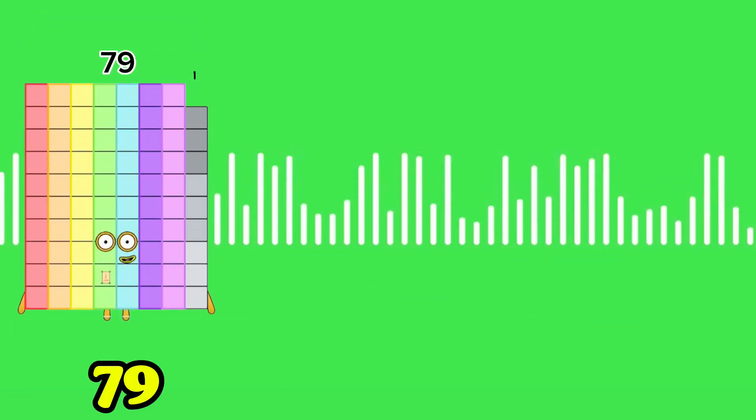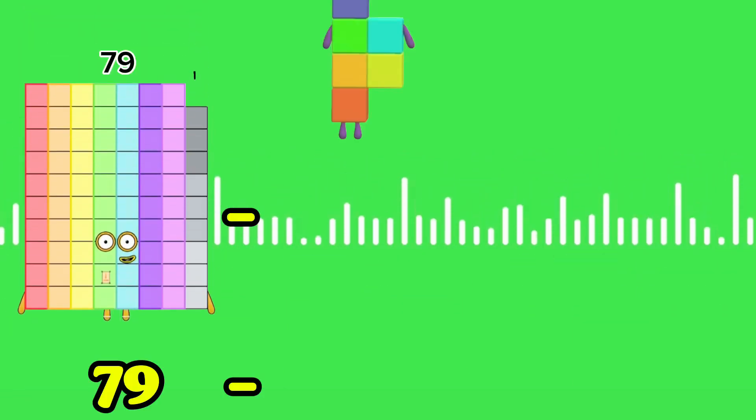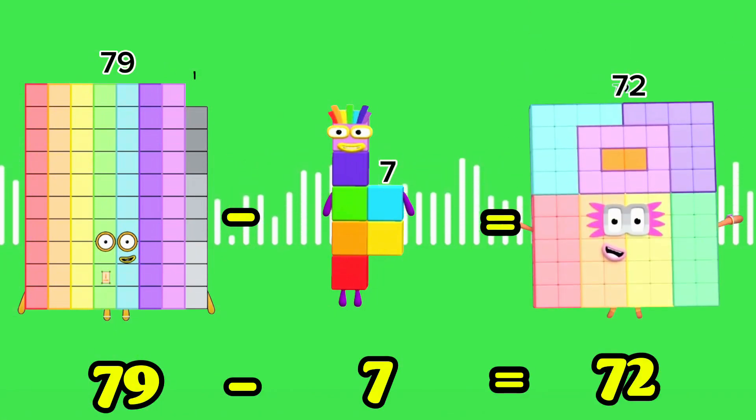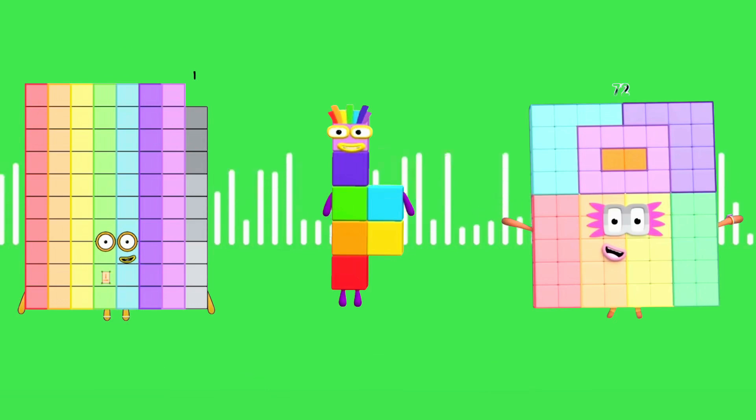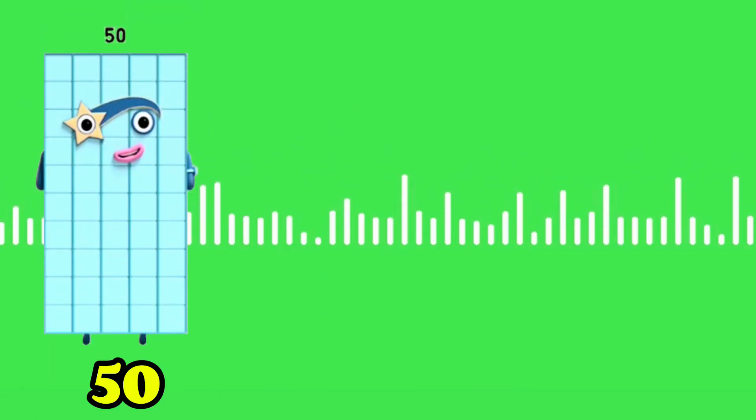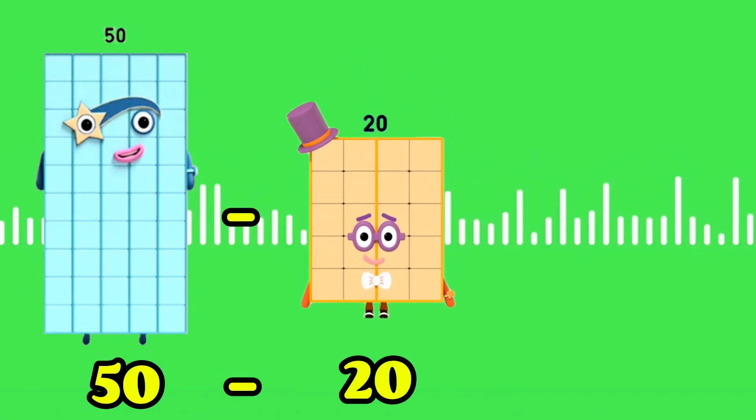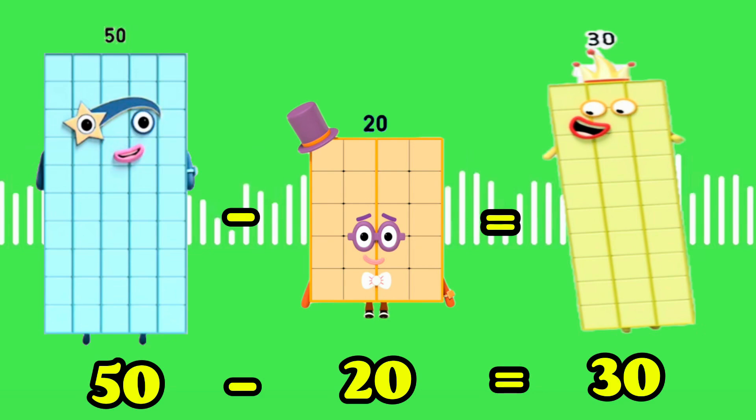59 minus 70 equals 32. 50 minus 20 equals 30.